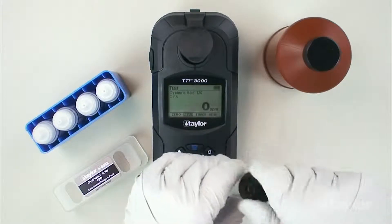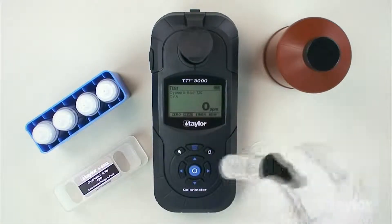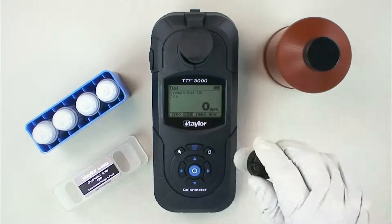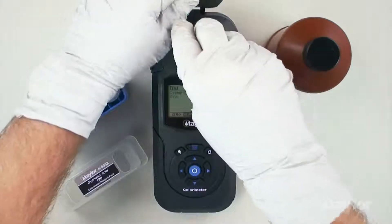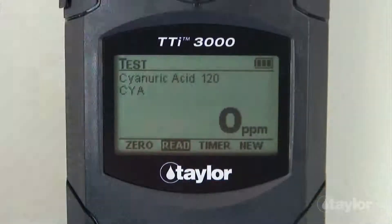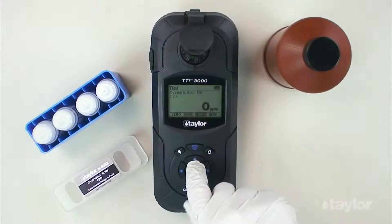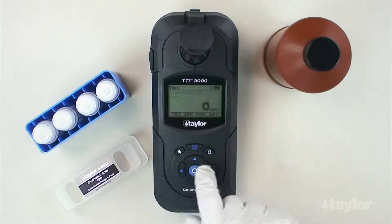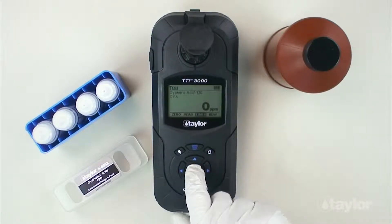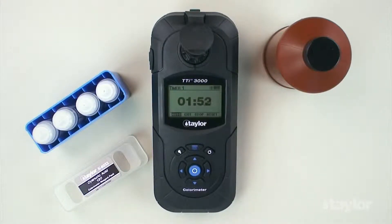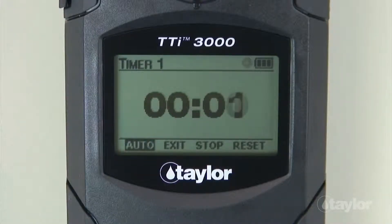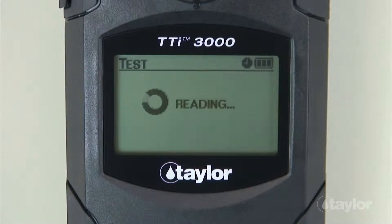Cap and invert five times to mix. Insert the sample cell into the sample cell compartment. Select timer using the scroll arrows and then press enter. Select start, then press enter. A two-minute countdown will begin. Immediately select auto and then press enter. When the timer beeps, the instrument will read the sample and the result will be displayed.